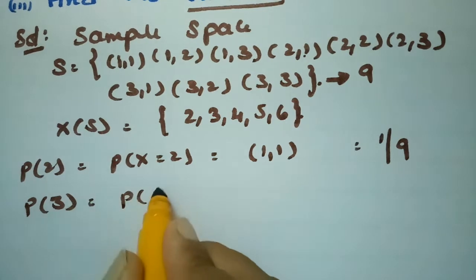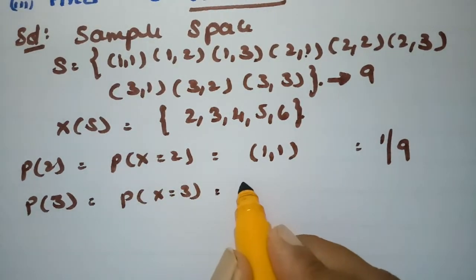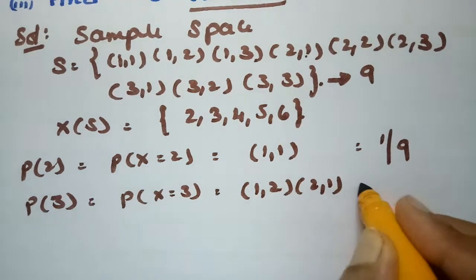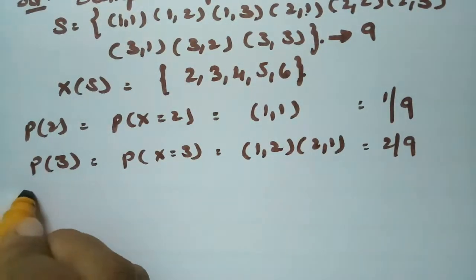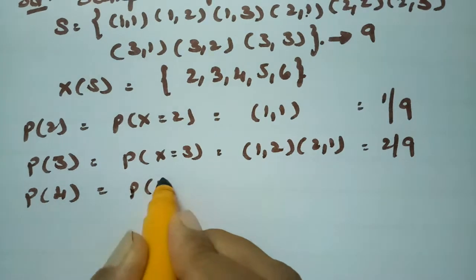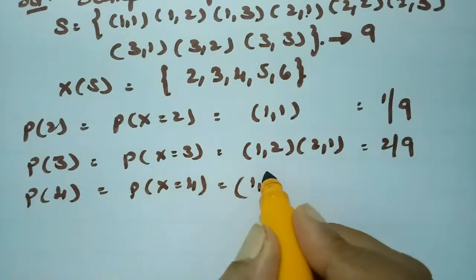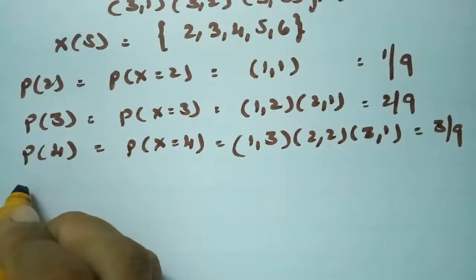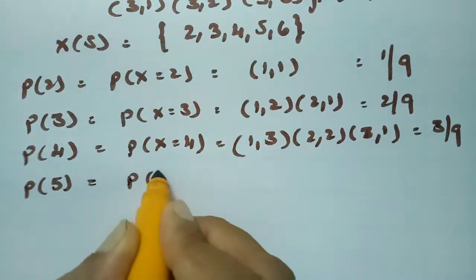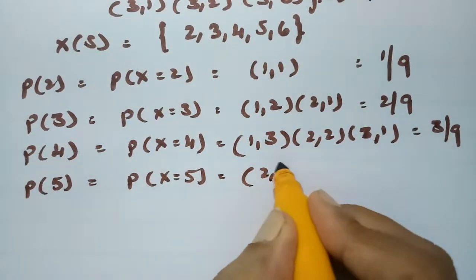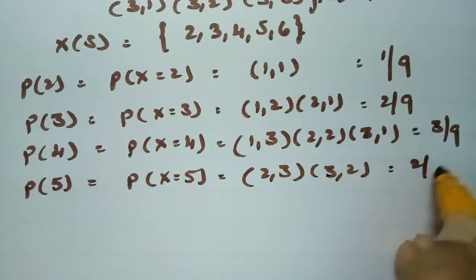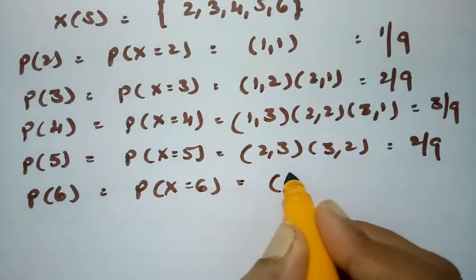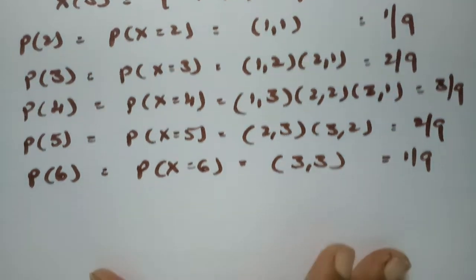P(X=3): the pairs (1,2) and (2,1) both sum to 3, so there are two chances — that is 2/9. P(X=4): the pairs (1,3), (2,2), and (3,1) give three chances — 3/9. P(X=5): the pairs (2,3) and (3,2) give two chances — 2/9. P(X=6): only (3,3) gives one chance — 1/9.